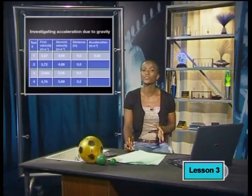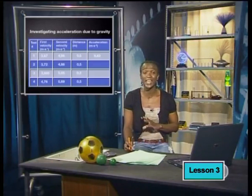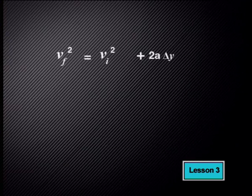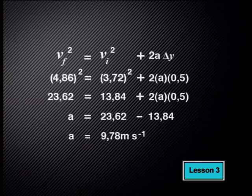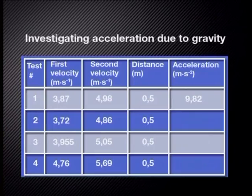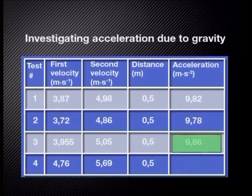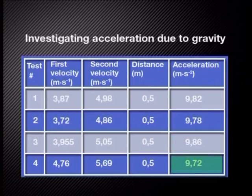We've collected all the results, so we must calculate the acceleration in every test. We do this by using the same equation as for the first test. The acceleration for the second test was 9.78 meters per second squared. For test 3, the acceleration was 9.86 meters per second squared. And for test 4, it was 9.72 meters per second squared.